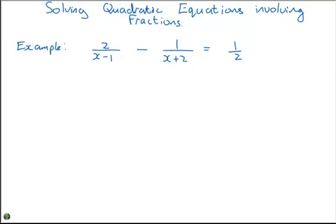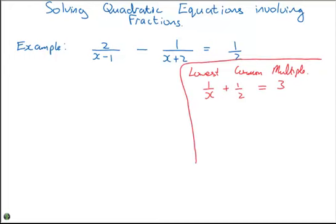Now whenever you have equations with fractions, you want to be thinking about the lowest common multiple. Now if I have a simple example, let's say 1 over x plus 1 over 2 is equal to 3, and I want to solve this equation. I'm going to explain what we do with fractions.